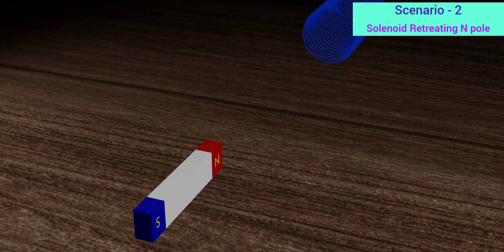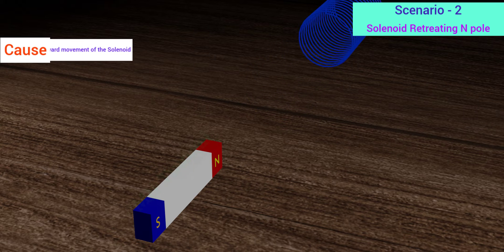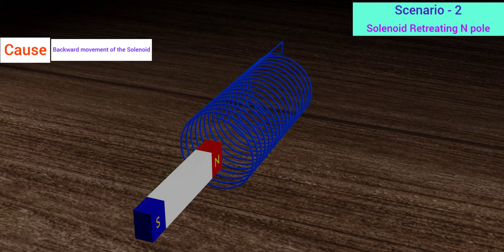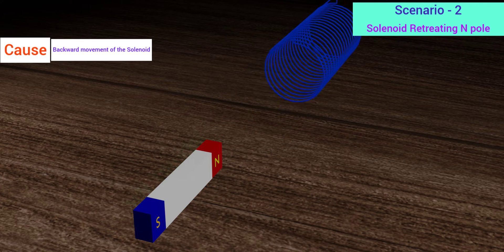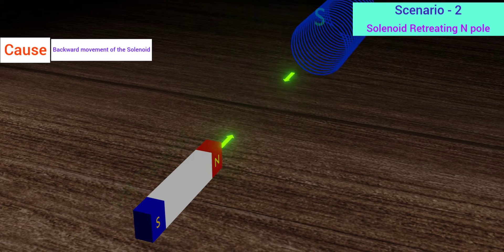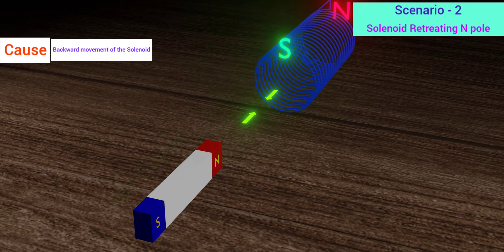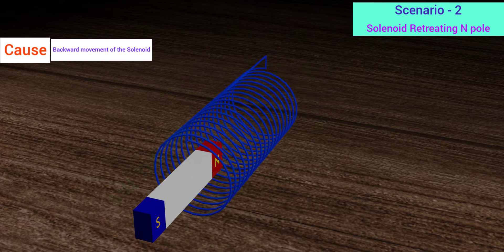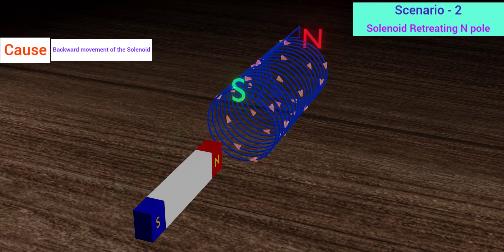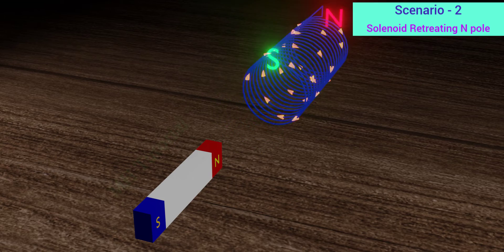Now check the second situation. Here, the cause of generation of the induced current is the retreat of the solenoid. To counter its movement, an attraction force should arise between the magnet and the solenoid. To do so, the solenoid should create a south pole near the magnet. And to produce a south pole, it should generate a clockwise current. Hence, the current should be clockwise in this case.